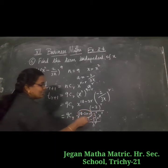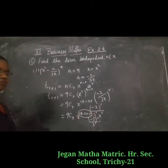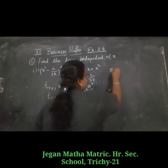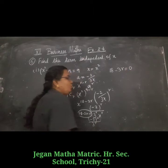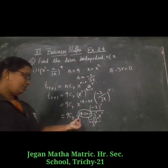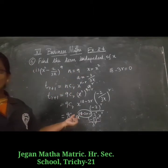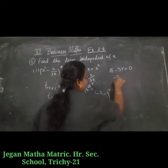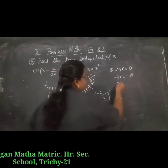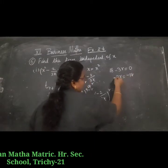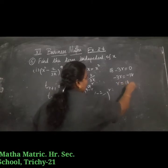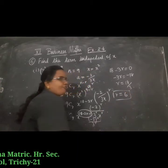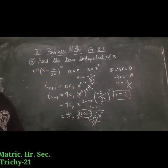This is the term considered as independent of x. For the term to be independent of x, we set the power of x equal to zero: 2n minus 3r equals 0. So 18 minus 3r equals 0, which gives minus 3r equals minus 18, and r equals 18 divided by 3, so r equals 6.